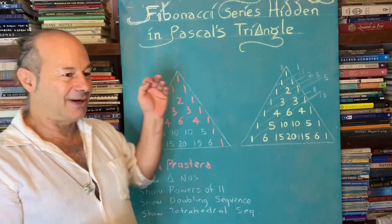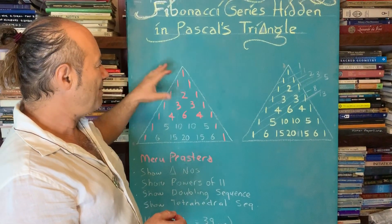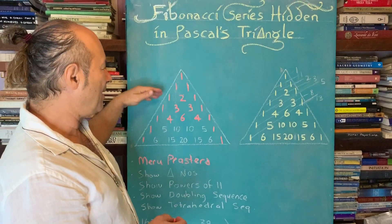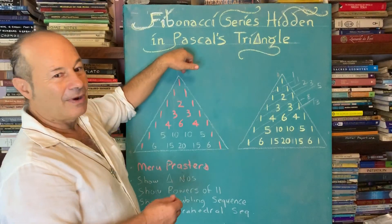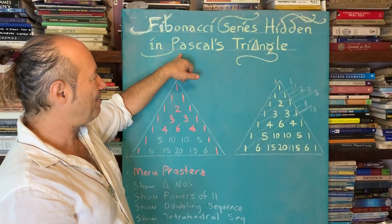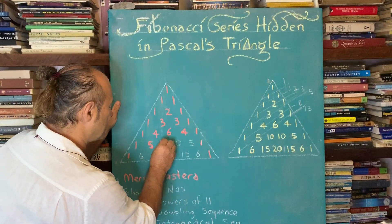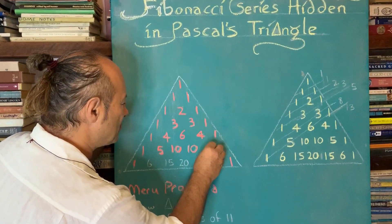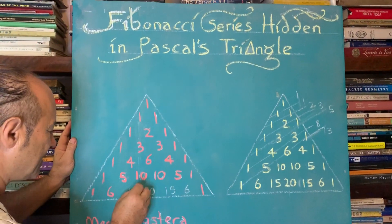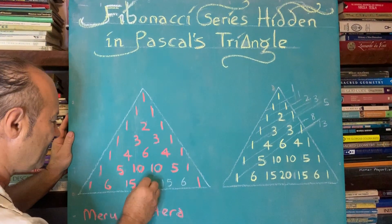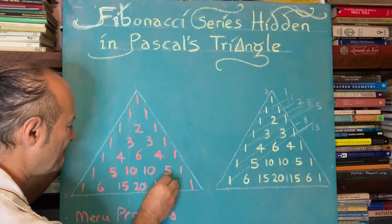Pascal died after 39 years - he lived a very short life - but in his time he must have had access to these ancient numbers. The western world has remembered this as Pascal's Triangle. These are very special numbers in mathematics; this led to probability theory. One and five is six, five and ten is fifteen, ten and ten make twenty - and we'll stop there. This is infinite, it can go forever.